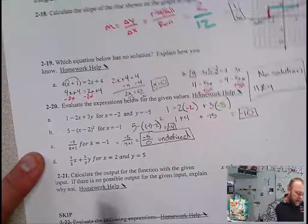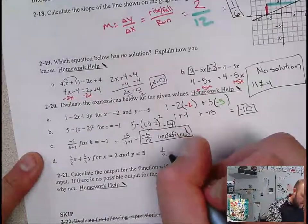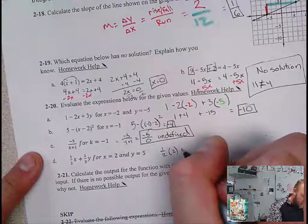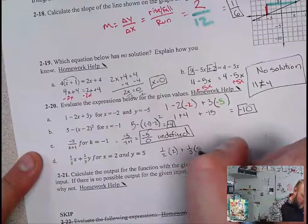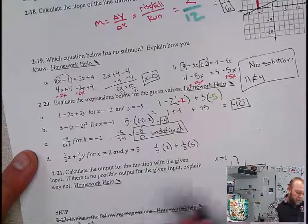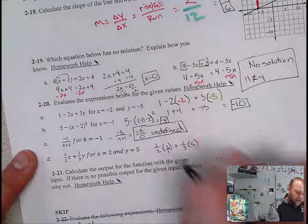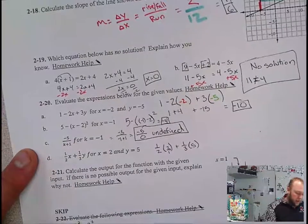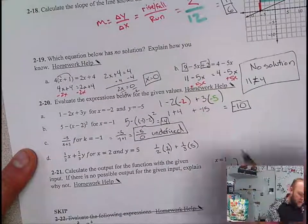Lastly, we've got this equation here. 1/2 times 2 plus 1/3 times 5. Remember, whenever we have a whole number times a fraction, we make the whole number a fraction by putting a one under it. One times two is two. Two times one is two.